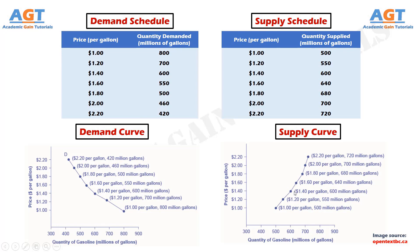This is a Supply Curve plotted from the data from the Supply Schedule, with supply quantity of gasoline on the horizontal axis and the price per gallon of gasoline along the vertical axis. The shape of Supply Curves will vary somewhat according to the product — steeper, flatter, straighter, or curved. Nearly all Supply Curves, however, share a basic similarity: they slope up from left to right and illustrate the law of supply.